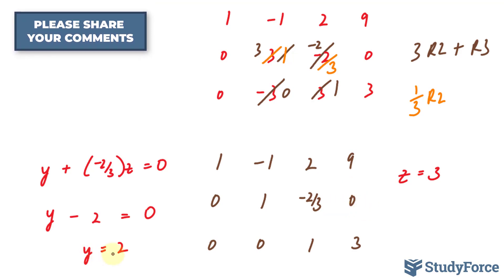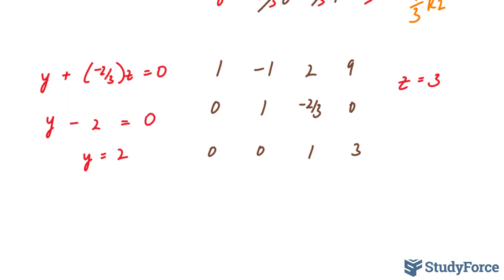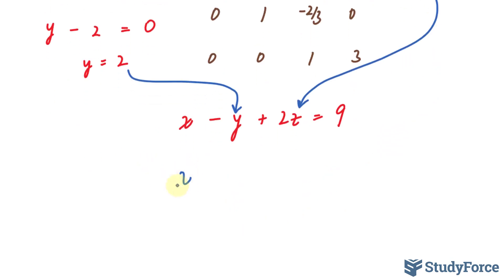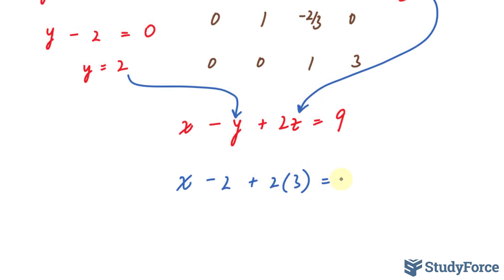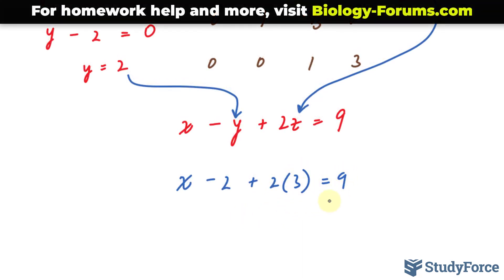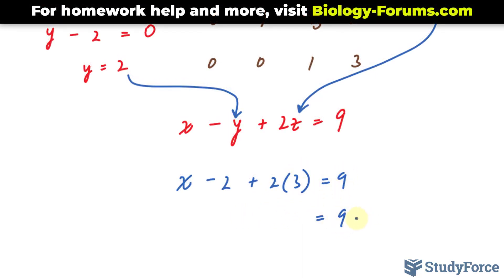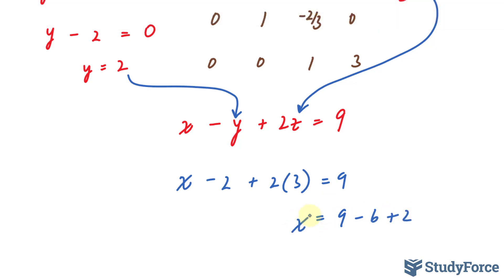And subsequently, now that we found 2 and 3, we can substitute these into the first equation, which is x minus y plus 2z is equal to 9. I'll take this and replace this z with it, this 2 into the y. We have x minus 2 plus 2 times 3 is equal to 9. Therefore, we have 9 minus 6 plus 2, and that should give us our x. 3 plus 2 is 5.